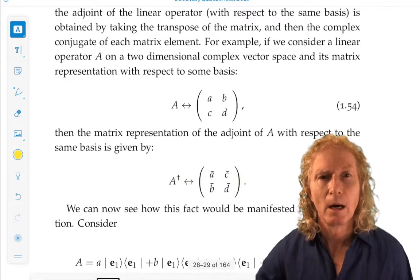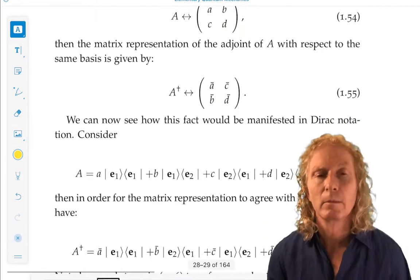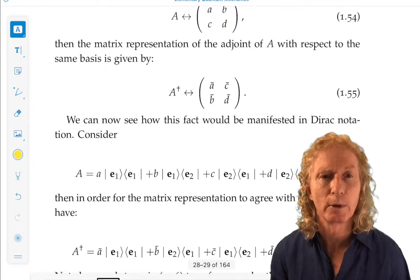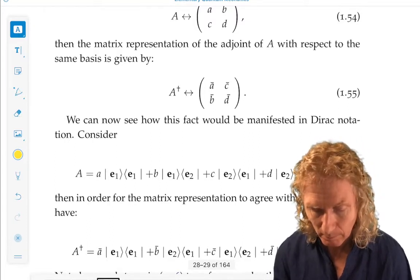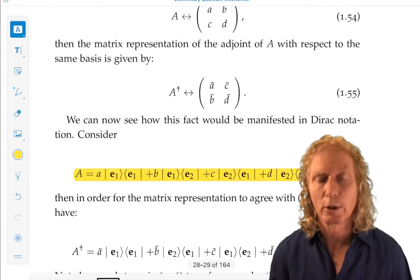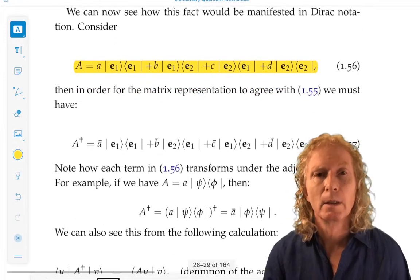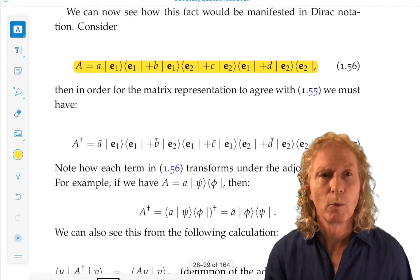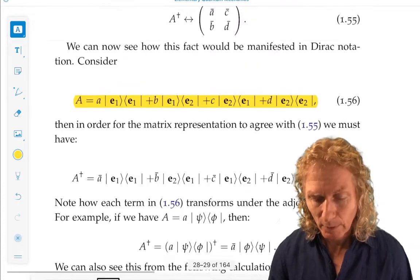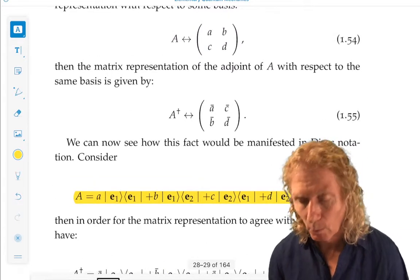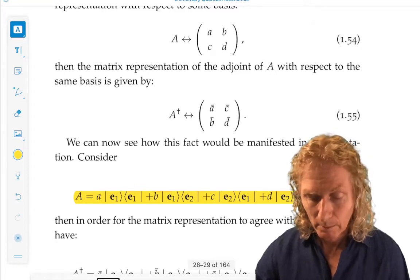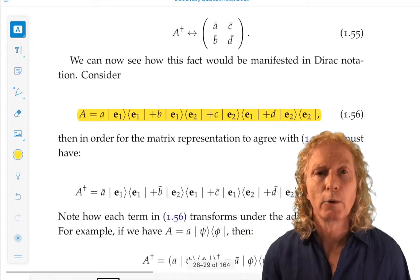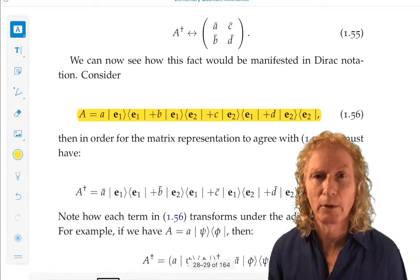Let's take that operator A and represent it in Dirac notation, where the basis we're using is an orthonormal basis E1, E2, or ket E1, ket E2. We showed last time that the operator could be represented in this form, where the brackets, back to back, are actually operators in this case. I urge you to verify that this operator gives us the matrix representation.